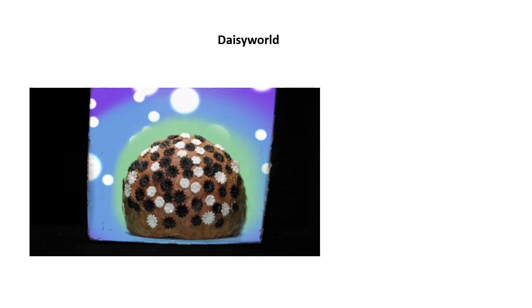But when the temperature increased, this favoured white daisies, which reflect more light back out, keeping them cool and helping to cool the planet down, similar to what clouds do on planet Earth. A kind of planetary scale homeostasis.